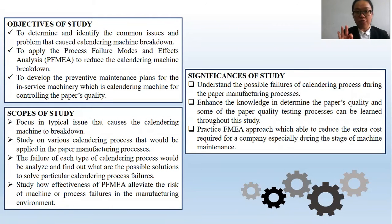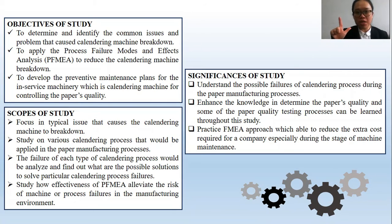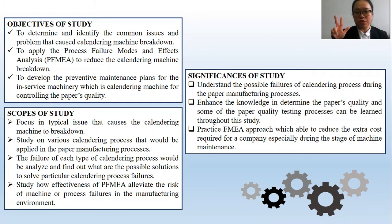There are three main objectives of this study. First, to determine and identify the common issues and problems that cause the calendering machine to break down. Second, to apply the PFMEA in order to reduce the calendering machine from breaking down. Third, to develop the preventive maintenance plan for the calendering machine for controlling paper quality.